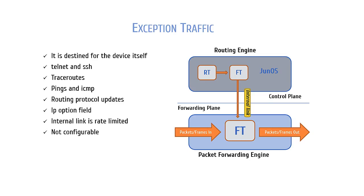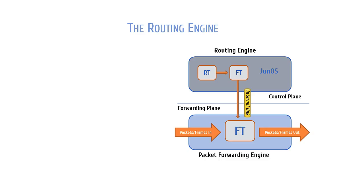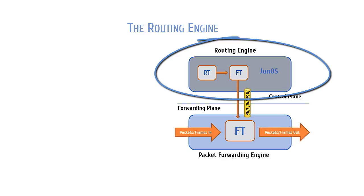We talked previously about how modular the Junos OS is, and the separation of the control and forwarding planes. We know that the processes that control routing and switching are clearly separated from the processes that control the forwarding of packets and frames. If you look at our graphic here, you can see how Junos processes traffic from the perspective of the control and forwarding planes. The routing engine is the main piece of the control plane and is the brain of the platform, as we mentioned in the last section.